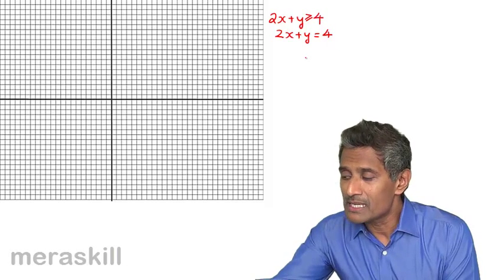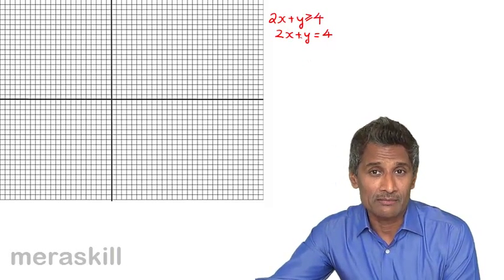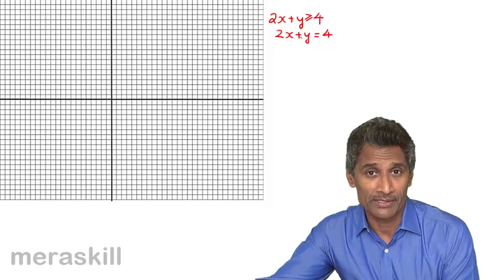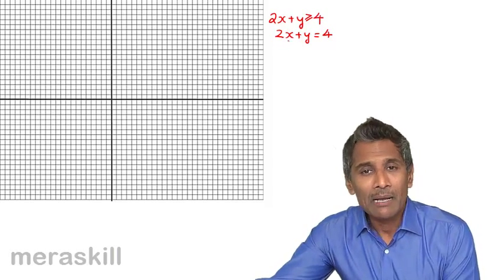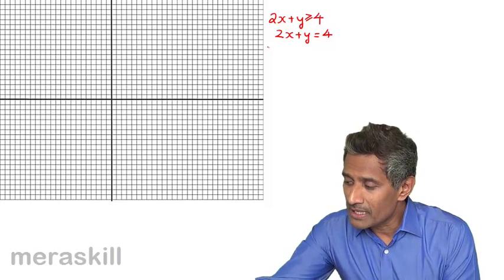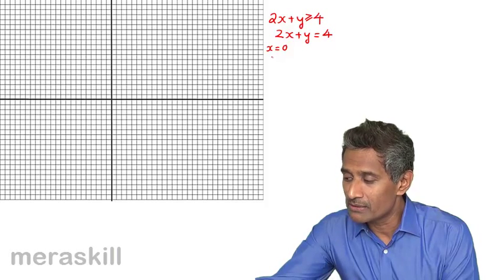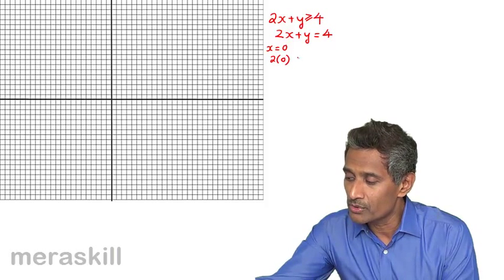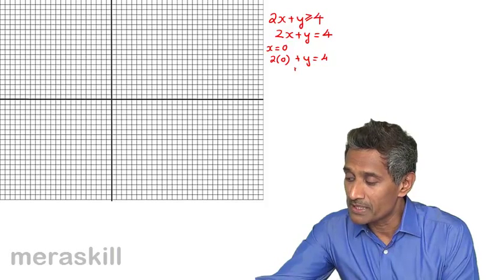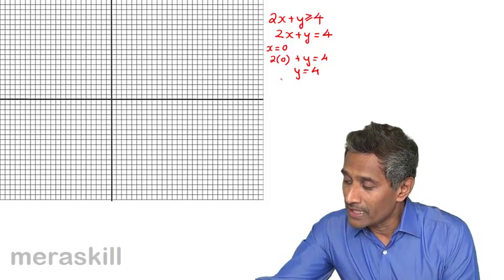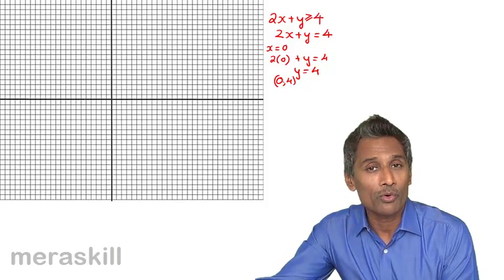Now where will this line lie? To draw the line, we need the addresses — the coordinates of at least two points — which can be done by arbitrary substitution. So we can take x as 0. If you put x as 0 in this equation, you get 2 into 0 plus y is equal to 4, which means y is equal to 4. That means this line will pass through the point (0, 4).